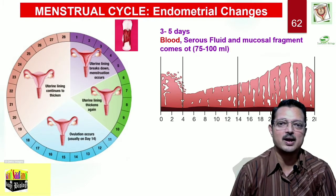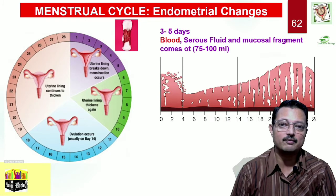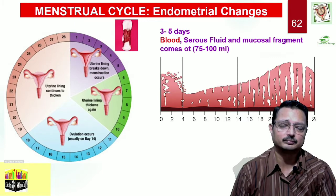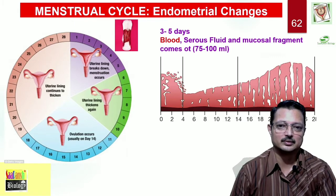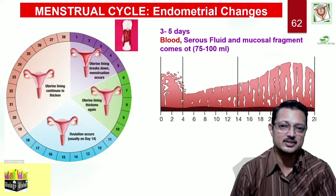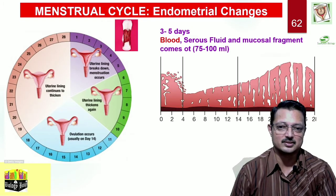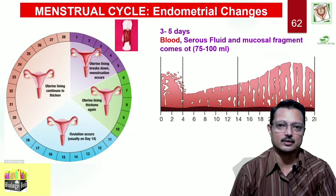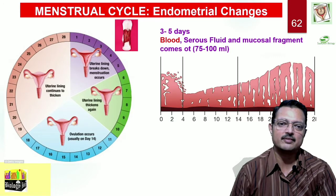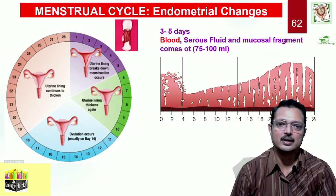You might have seen the movie Padman, which is wholly dedicated toward improvement of sanitary and sexual hygiene during menstruation. That can save you from a lot of diseases, especially STDs and other infections. This phase continues for 0 to 5 days, or 3 to 5 days. The volume of bleeding might be 75 to 100 ml, including the mucosal fragments and the serous fluid.